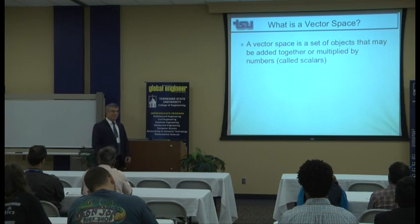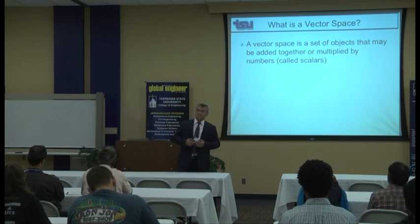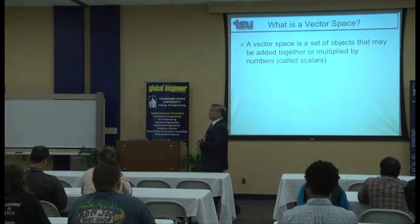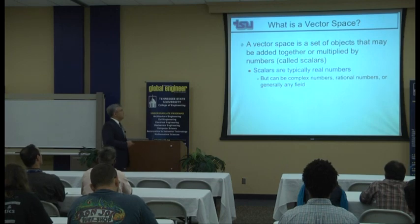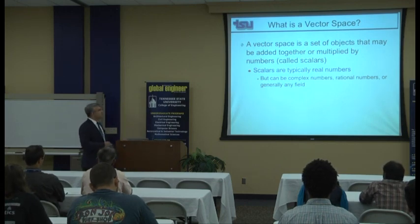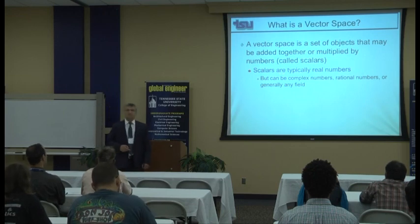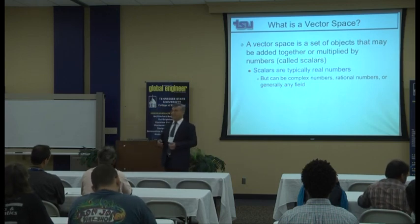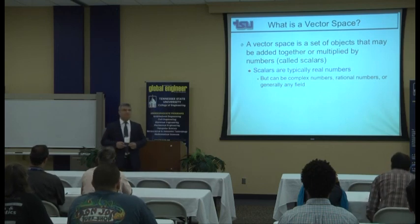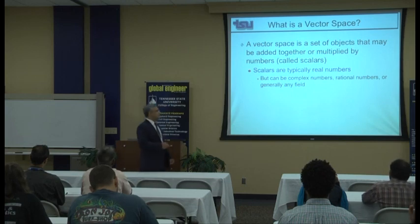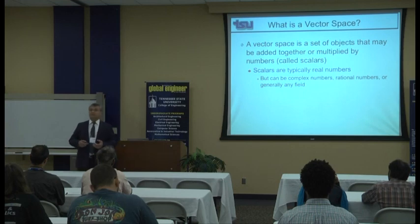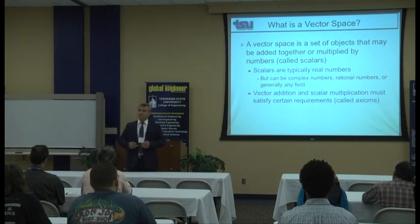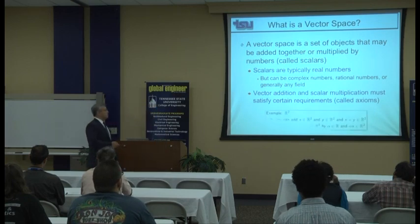What is a vector space? A vector space is a set where you can add elements of the set or multiply the elements by a scalar. Scalars are typically real numbers. So a vector space is a set of objects that can be added together and multiplied by scalars. If the scalars are real, we call them real vector spaces; if complex, complex vector spaces. In general, the scalars can be any field — even rational numbers.